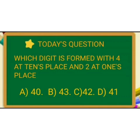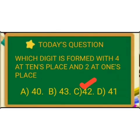Today's question: which digit is formed with four at the tens place and two at the ones place? Students, we learned one tenth is equal to ten ones. So four at the tens place gives forty, and two at the ones place gives — yes, students — forty two.